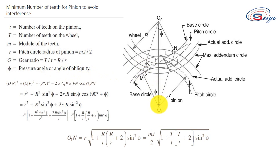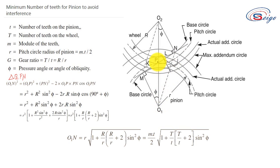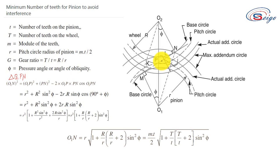First we have to determine the minimum number of teeth for the pinion. We have to calculate the distance O1N. From triangle O1PN, O1N squared will be equal to O1P squared plus PN squared minus 2 times O1P into PN times cos of angle O1PN, which is the angle between O1P and PN.